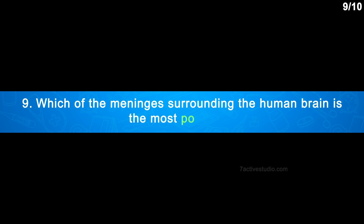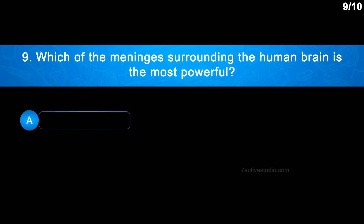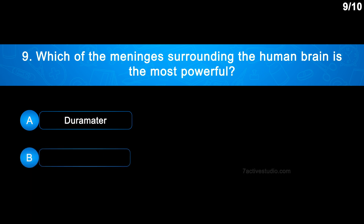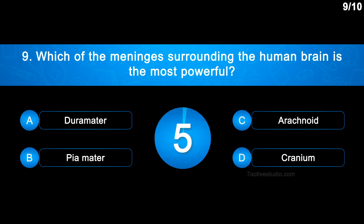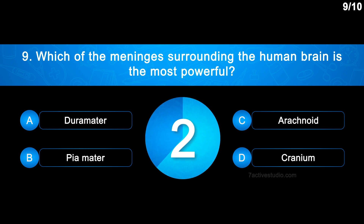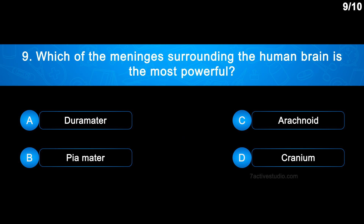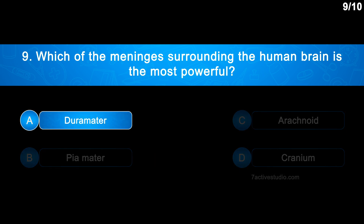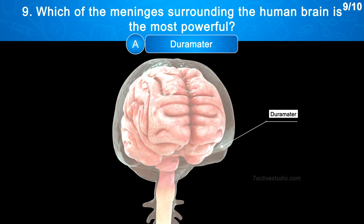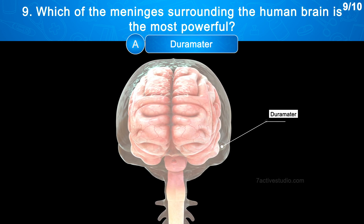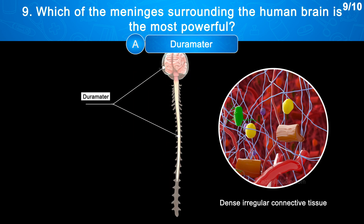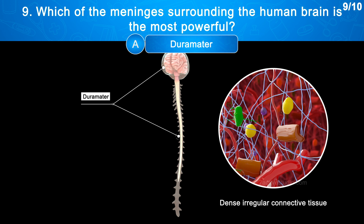Question No. 9: Which of the meninges surrounding the human brain is the most powerful? Option A: Dura mater; Option B: Pia mater; Option C: Arachnoid; Option D: Cranium. The correct answer is Option A: Dura mater. The dura mater is the tough outer layer. It is a thick membrane surrounding the brain and spinal cord, made up of dense irregular connective tissue.